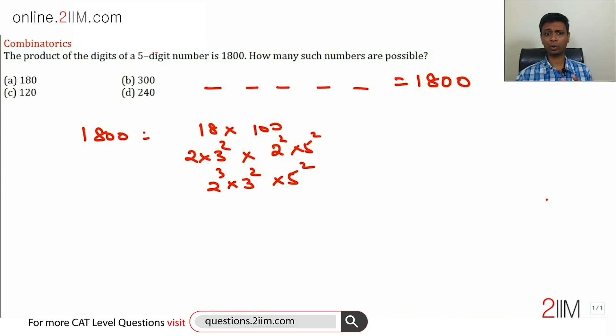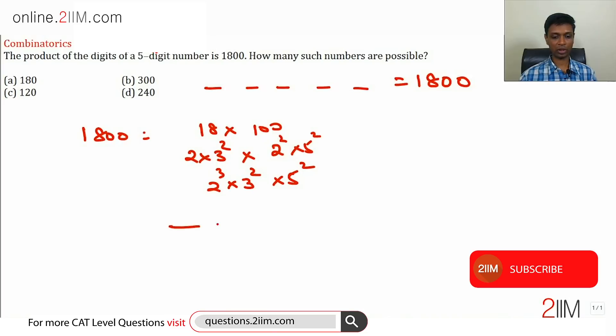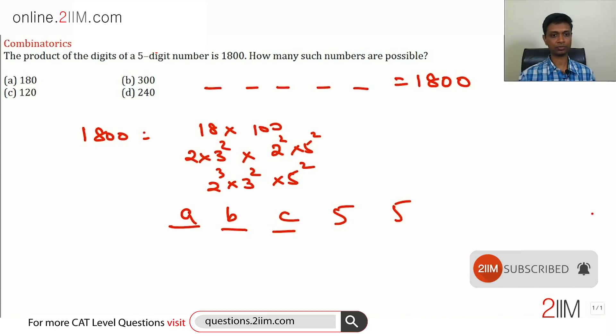Somehow within these digits we have to get this combination 2 cubed times 3 squared times 5 squared such that the product is 1800. To start with, we have two 5s. To generate a 5 as a product, I need to have 5 as one of the digits. Four times 6 or 7 times 9 is not going to give us a 5. So this 5-digit number has two 5s that I already have in the bag. Only the remaining 3 digits, A, B, C, I need to worry about.